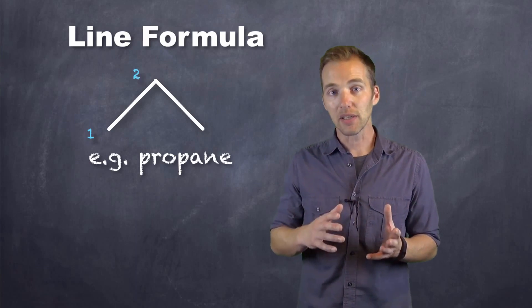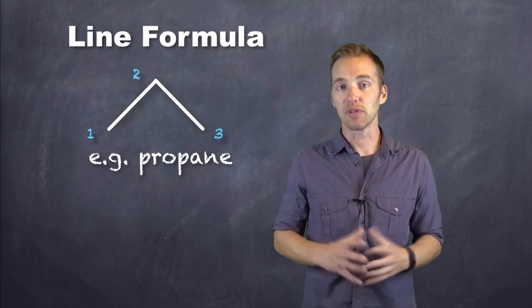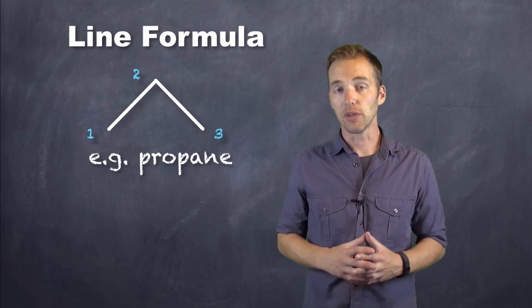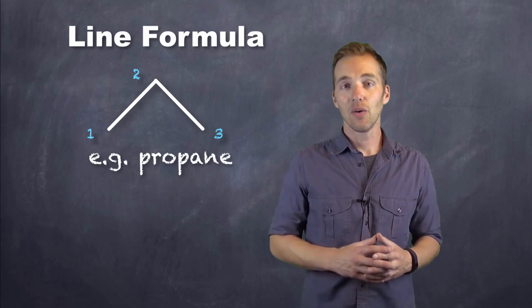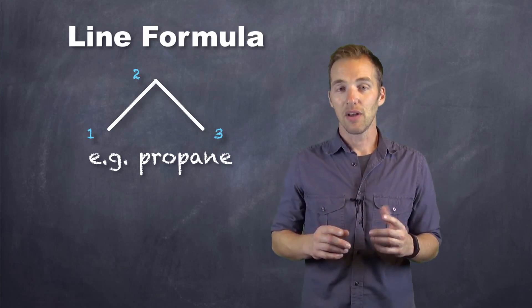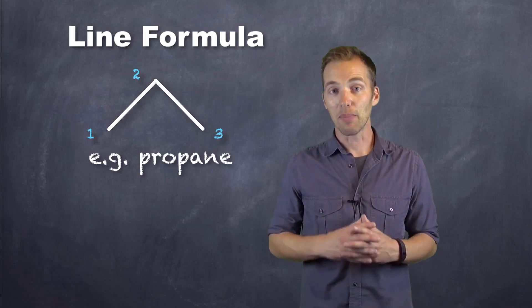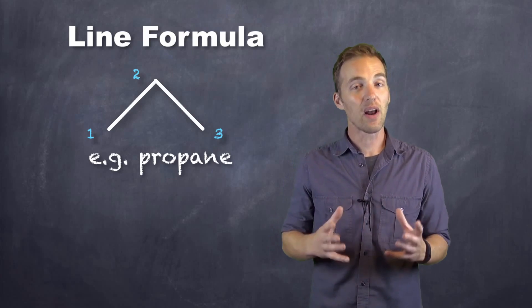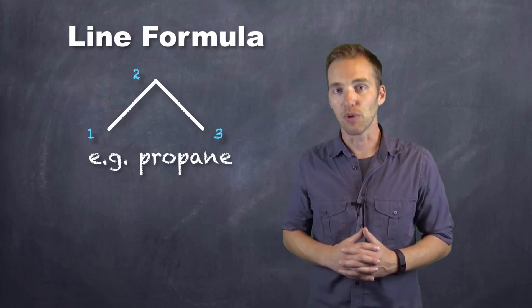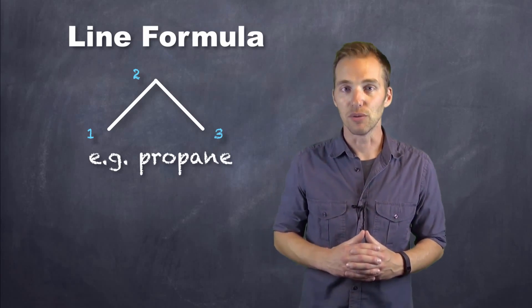At each point, before it changes direction again, that represents a carbon as well. So something like propane could be represented like this, where the two terminal ends of the lines represent one carbon each, and the point in the middle represents that third carbon. Quite often, especially when we get into more complex structures, this is the preferred method to use.